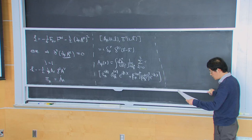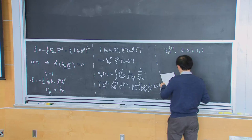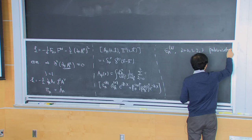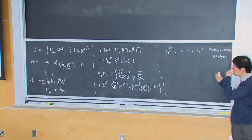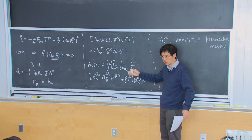So epsilon^mu_alpha for alpha equal to 0, 1, 2, 3 — these are four polarization vectors. You can simply choose them as, say, (1,0,0,0), (0,1,0,0), etc. In that case this is just like four decoupled scalars, but introducing a polarization vector allows me to write them in a more general way.